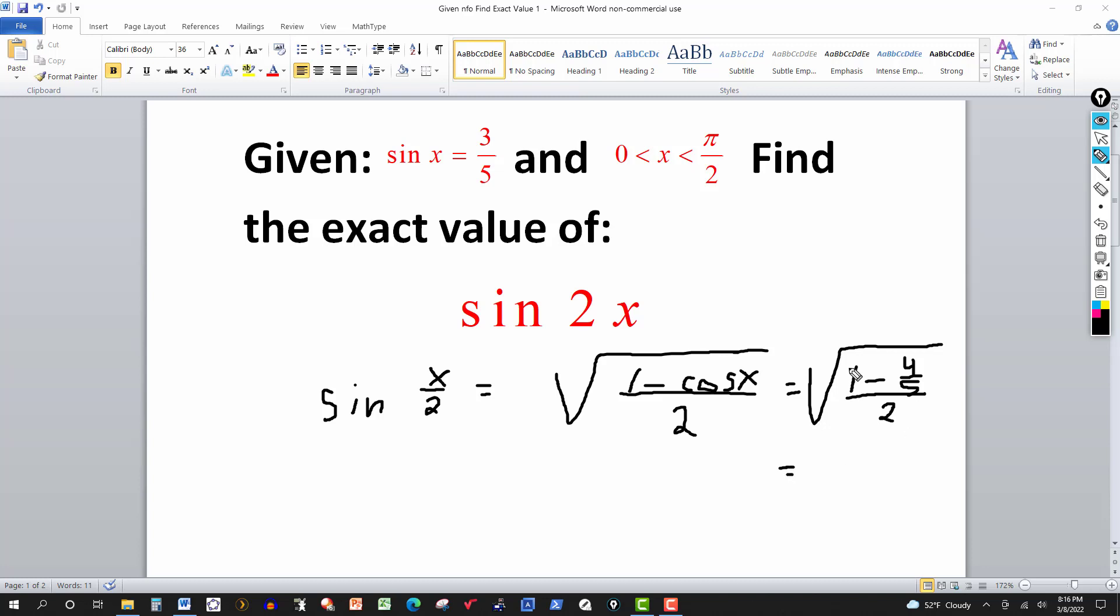Let's multiply the top and the bottom here by 5 to clear the fractions. So 5 times 1 is 5, and then 5 times 4 fifths cancels the 5. So this gives me a 4. 5 minus 4 is 1, and the square root of 1 is 1. So on top, I will get a 1. And the bottom, I have 2 times 5. That's the square root of 10 then.